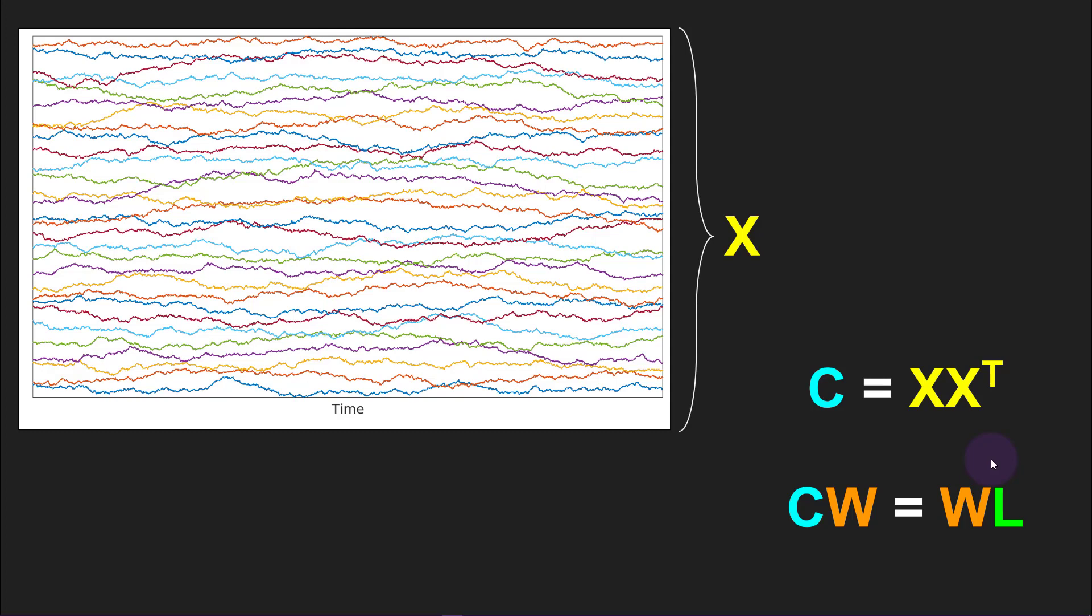Sometimes there is structure embedded in a high-dimensional data set that you don't necessarily see in the original data space, but that can be easily seen and easily quantified using a different kind of space after applying an appropriate transformation matrix.